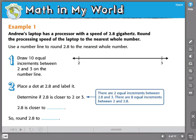In our first example here, Andrew's laptop has a processor with a speed of 2.8 gigahertz. We're going to round this processing speed of the laptop to the nearest whole number. Remember that our I can statement was that I can round decimals to any place. That means we may be rounding to whole numbers, we may be rounding to decimal numbers, we have to really make sure we know which place value we are rounding to. Today we are rounding to the nearest whole number or ones place.